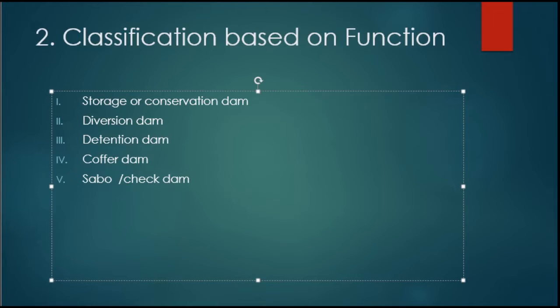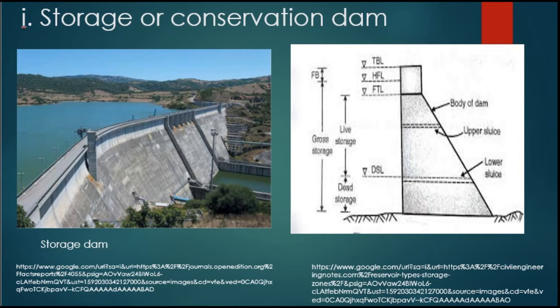The second classification is on the basis of function. On this basis, dams are classified as: first, storage or conservation dam; second, diversion dam; third, detention dam; fourth, coffer dam; and fifth, sabot or check dam.